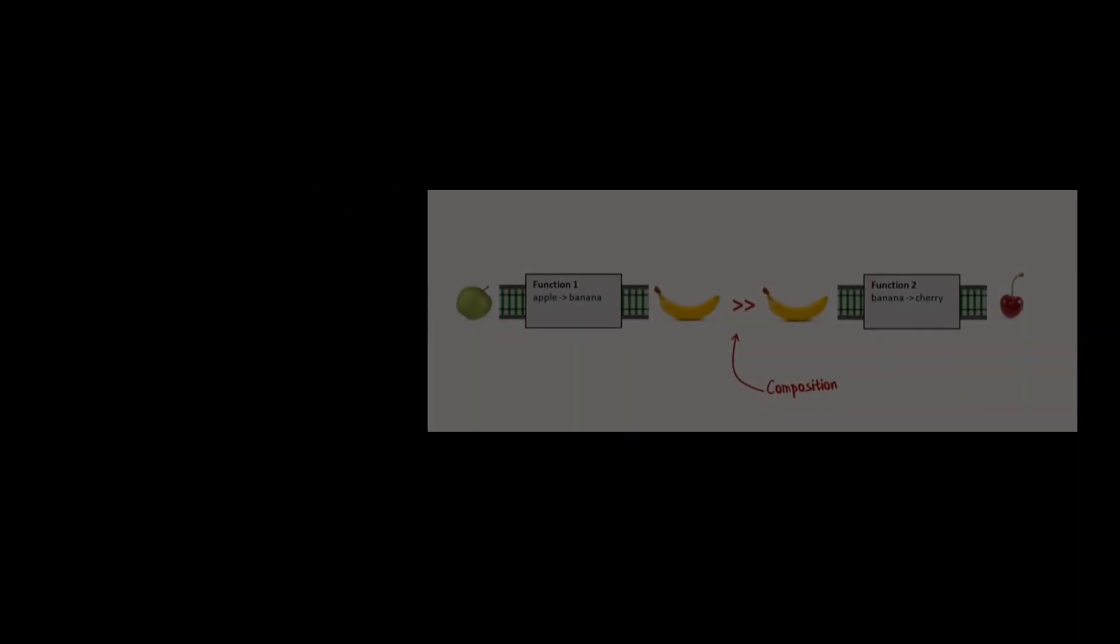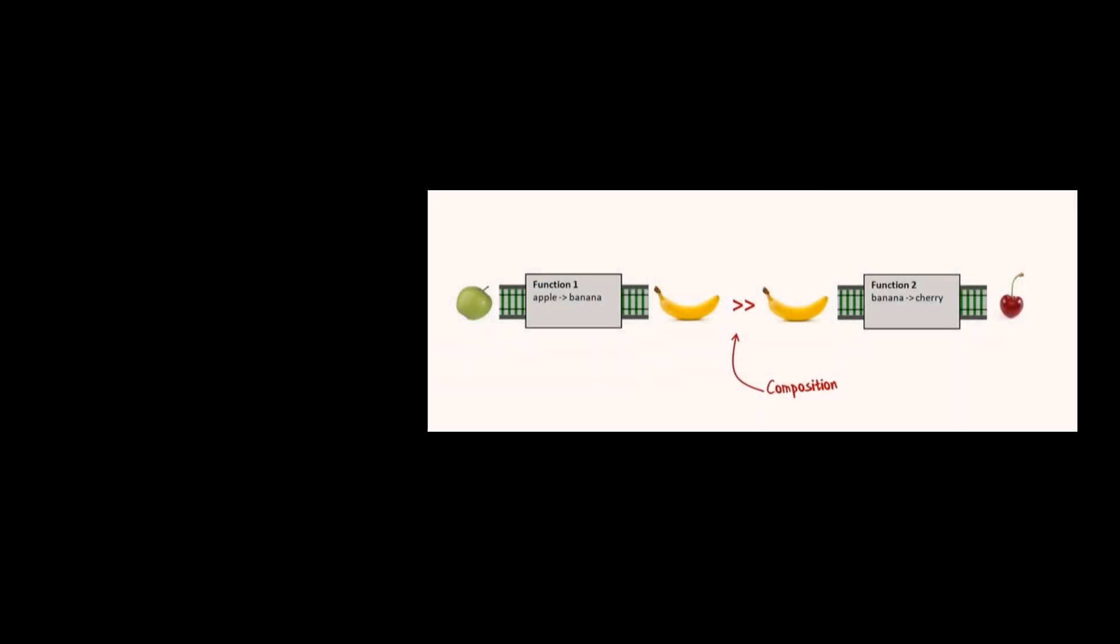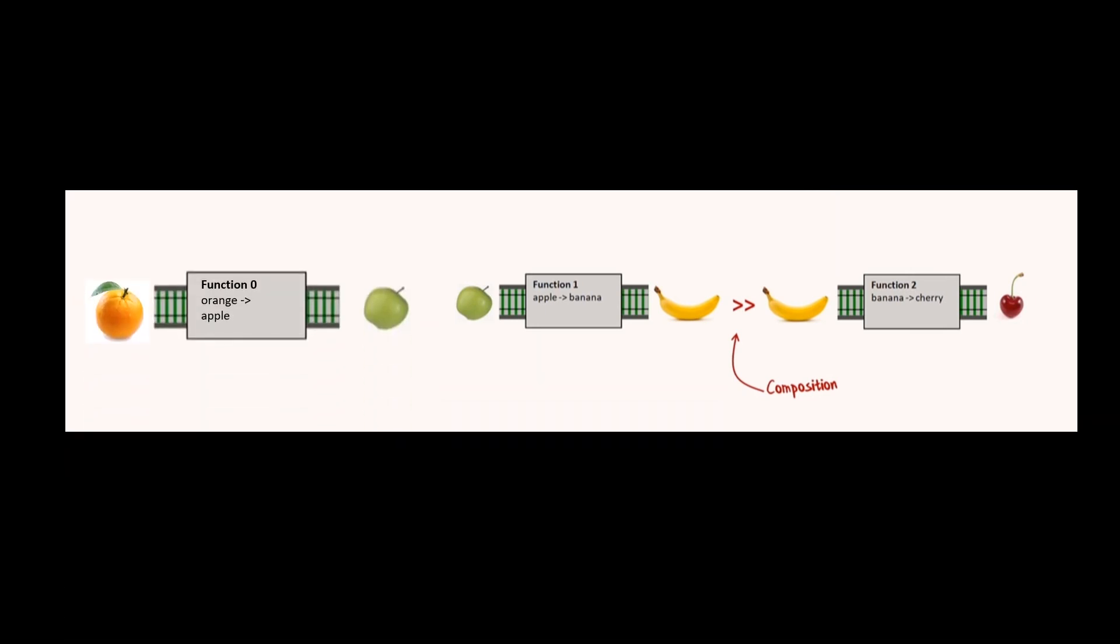So if we go back to our diagram from Scott Wlaschin and the railroad programming example, here we have our functor. And if we combine this with our orange to apple, this gives you the profunctor. So hopefully that makes sense.